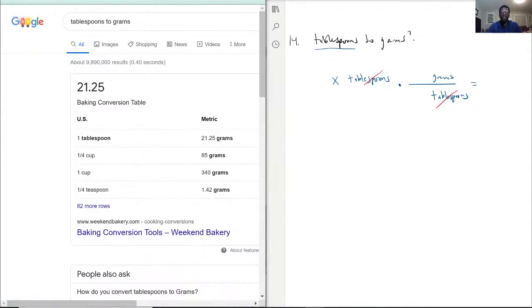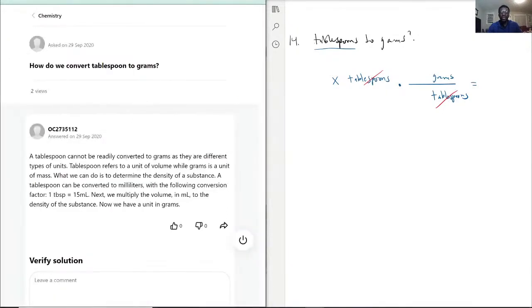But this answer here actually brings a good point that tablespoons typically are a measure of volume, while grams is a unit of mass. And if we are going based off of that, to even get to this point...